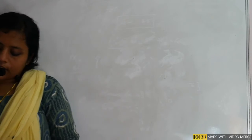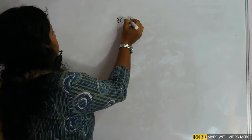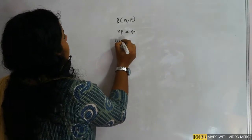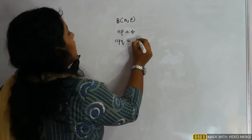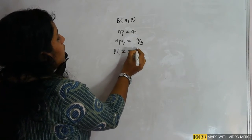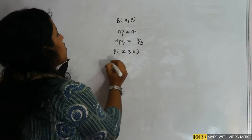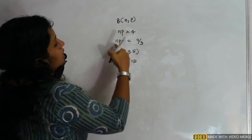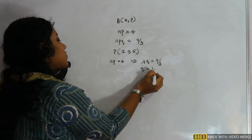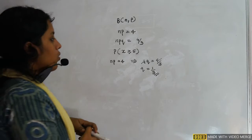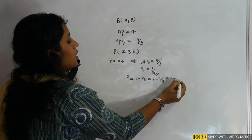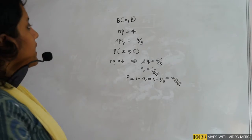For a binomial distribution B(n, p): np = 4 and variance npq = 4/3. From these, q = (4/3)/4 = 1/3, and p = 1 − 1/3 = 2/3. The question asks for the probability of X greater than or equal to 5.